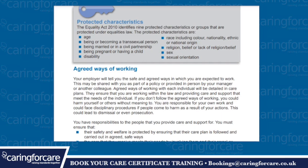Protected characteristics. The Equality Act 2010 identifies nine protected characteristics or groups that are protected under equalities law. The protected characteristics are: age; being or becoming a transsexual person; being married or in a civil partnership; being pregnant or having a child; disability; race including colour, nationality, ethnic or national origin; religion, belief or lack of religious belief; sex; and sexual orientation.